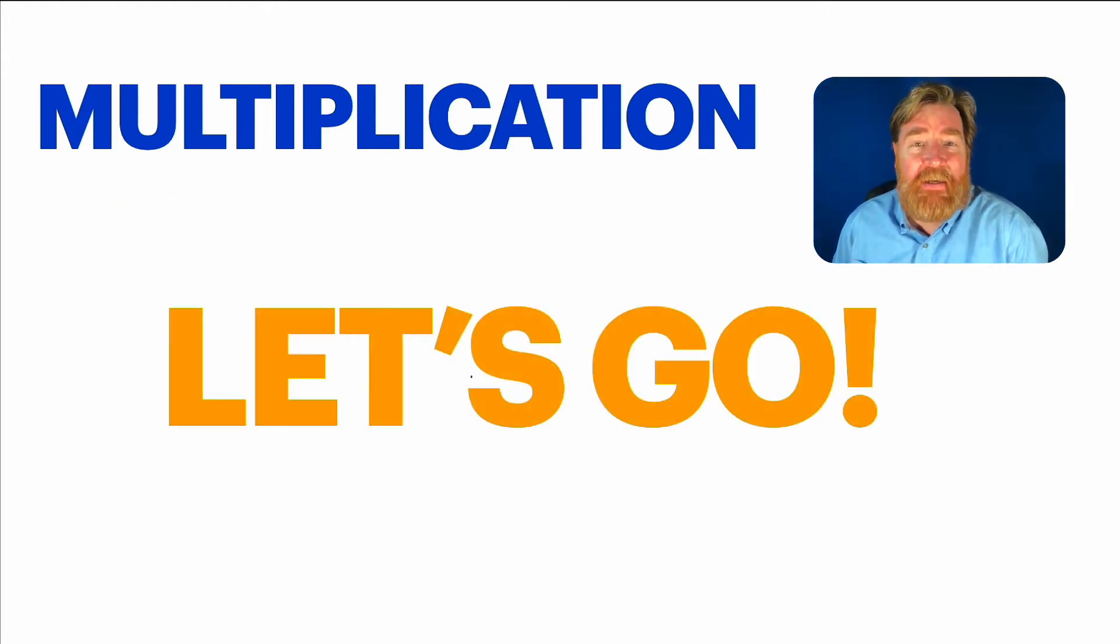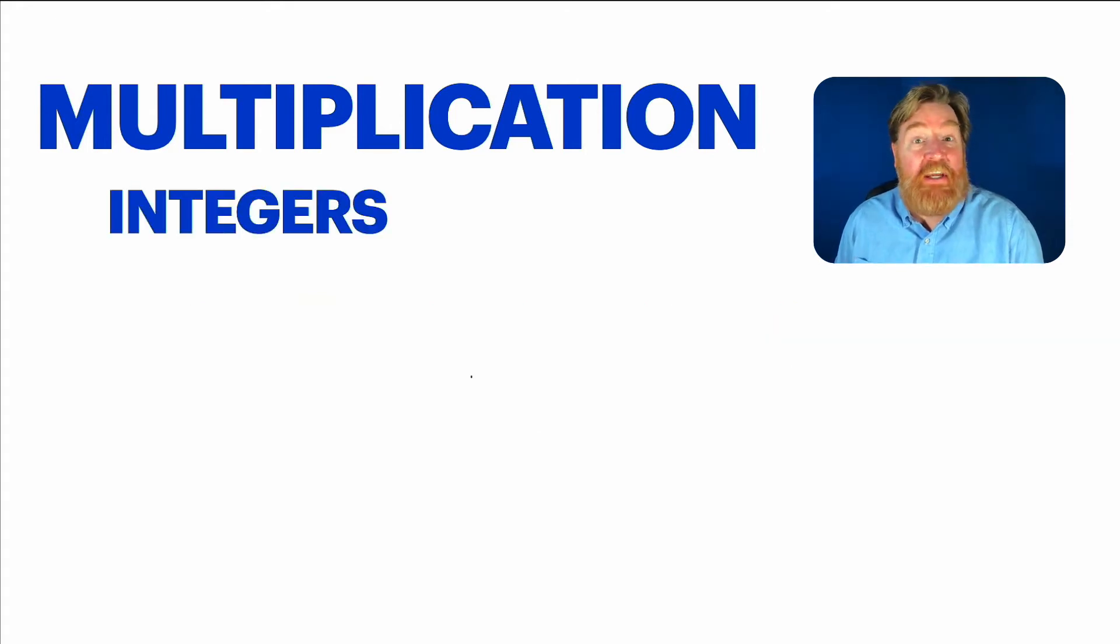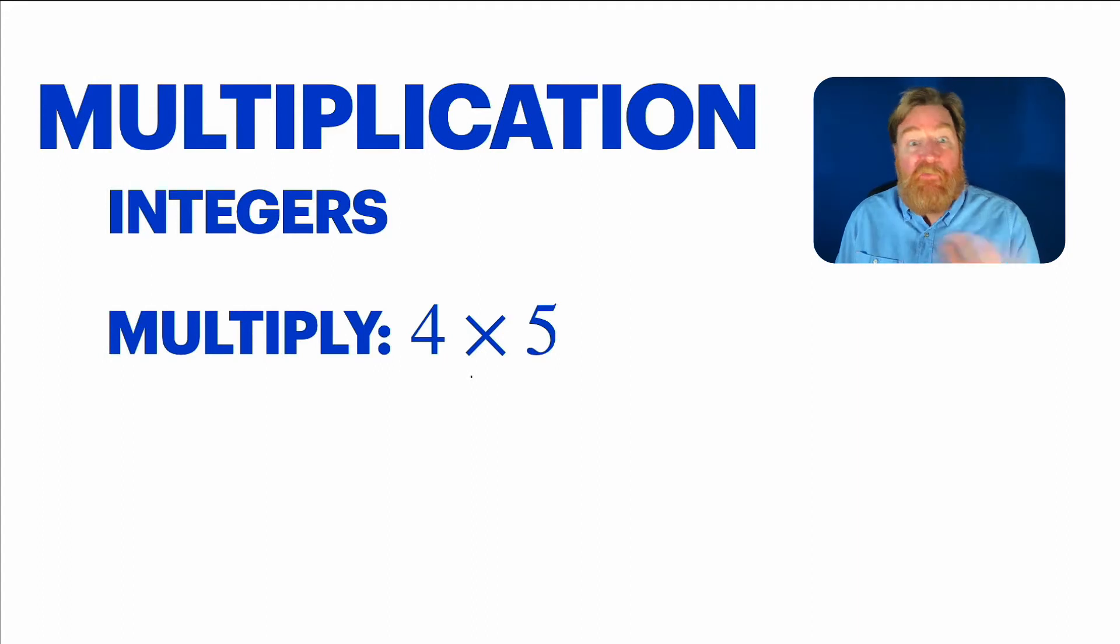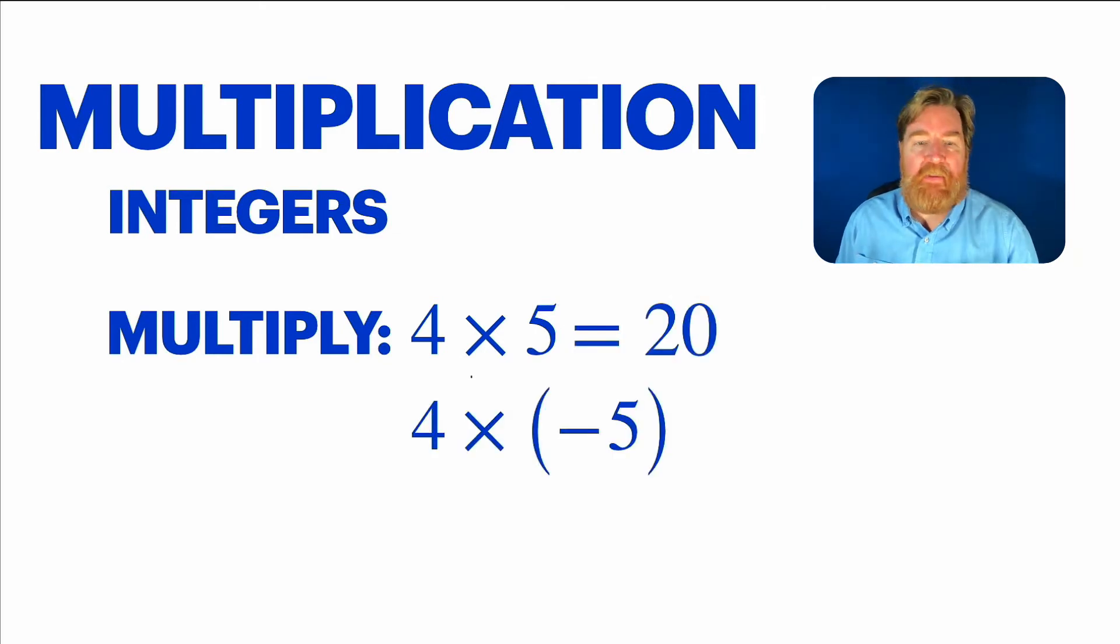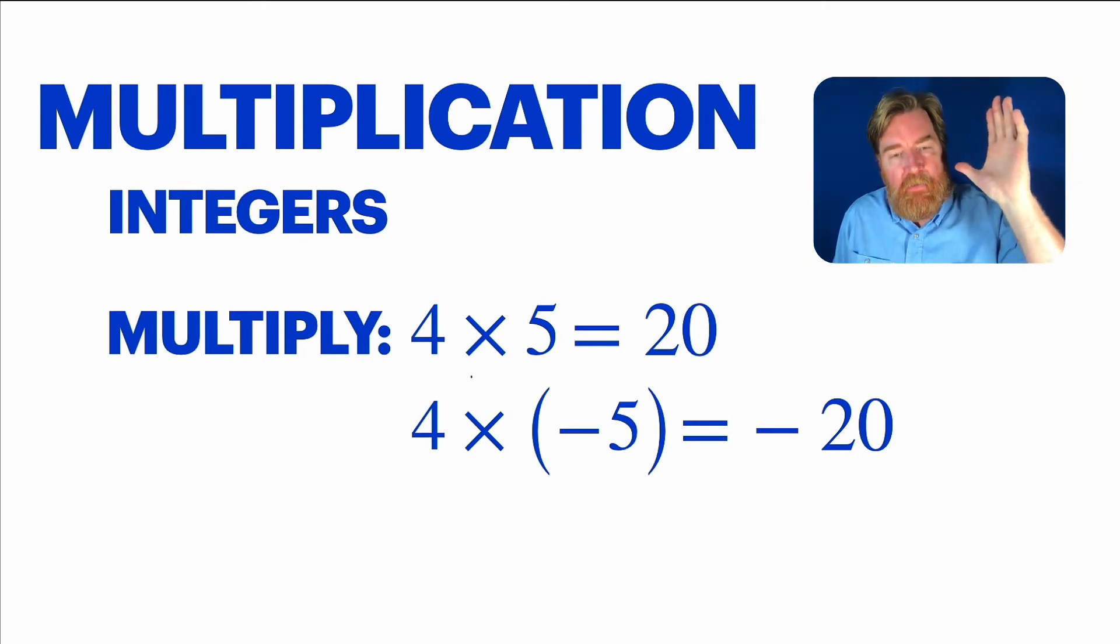So let's go. Let's see how some of these numbers behave under multiplication. How about we start with the integers? Four times five, you got that. Those are just whole numbers, they're integers, but those are also whole numbers. Four times five is 20. No big deal. What if we throw a negative in there? Four times negative five?